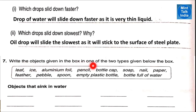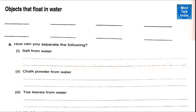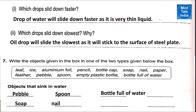Write the objects given in the box in two types. Objects that sink in water: pebbles, soap, nail, spoon, and a bottle full of water — all these things will sink in water.